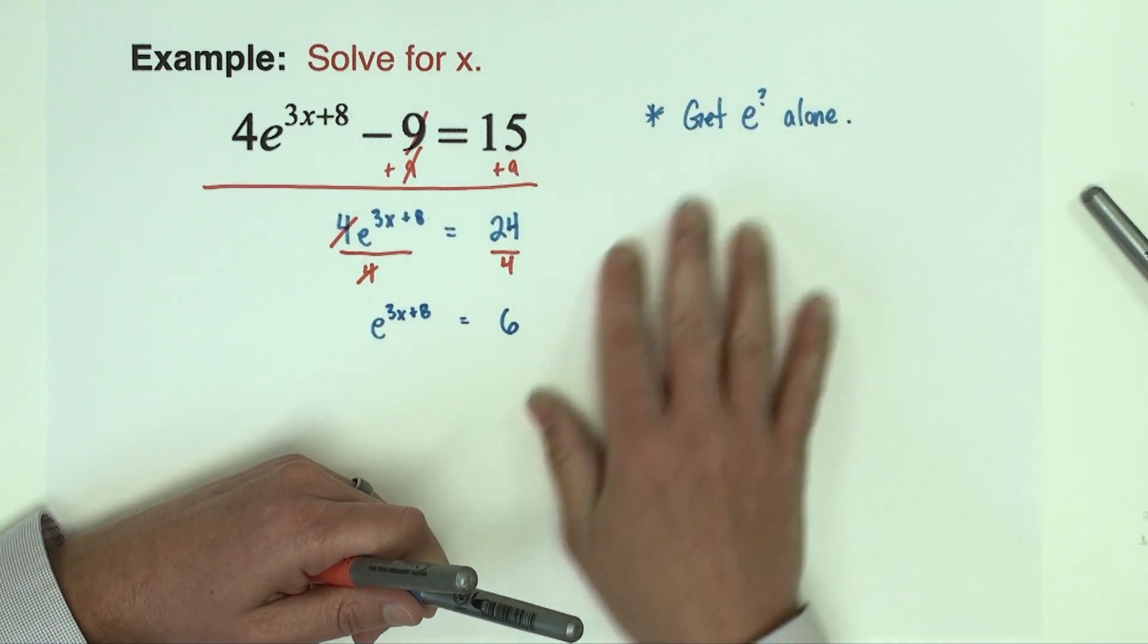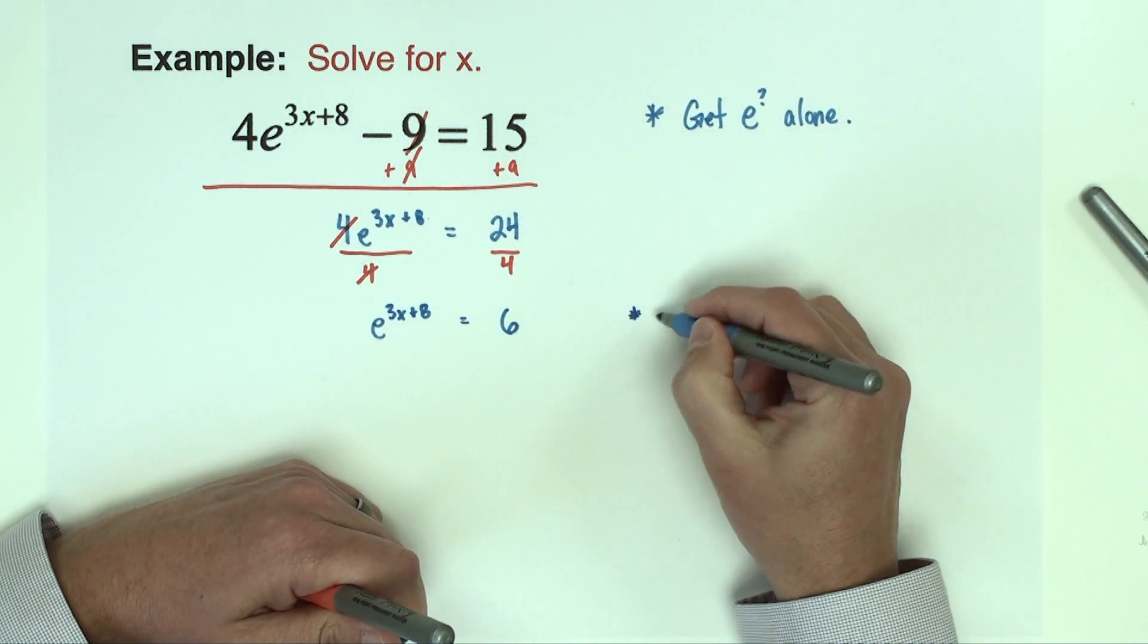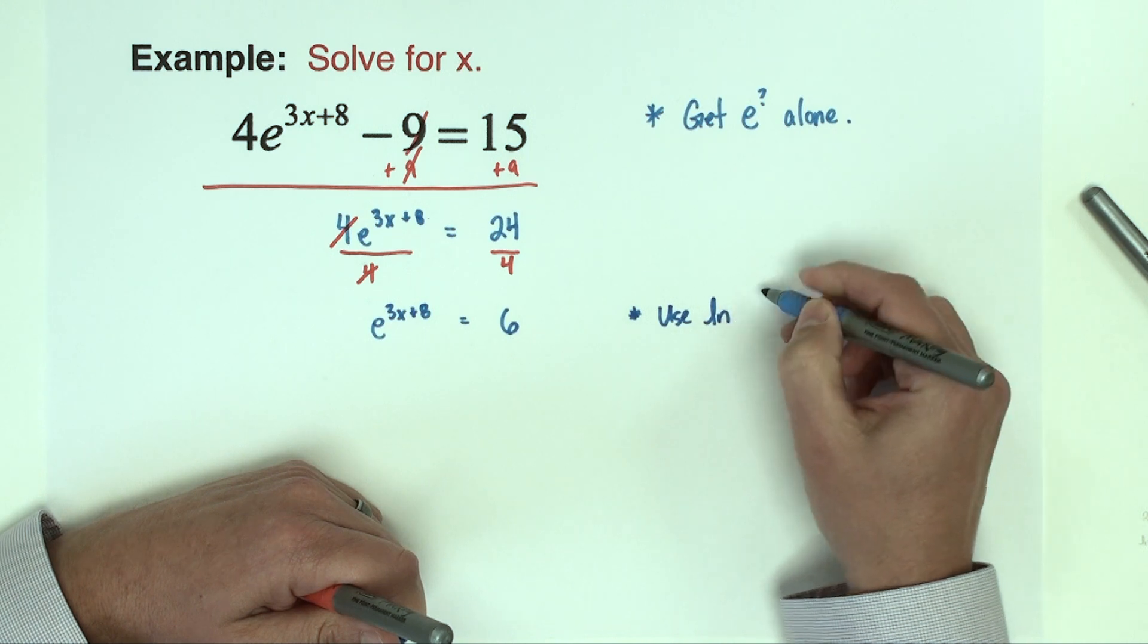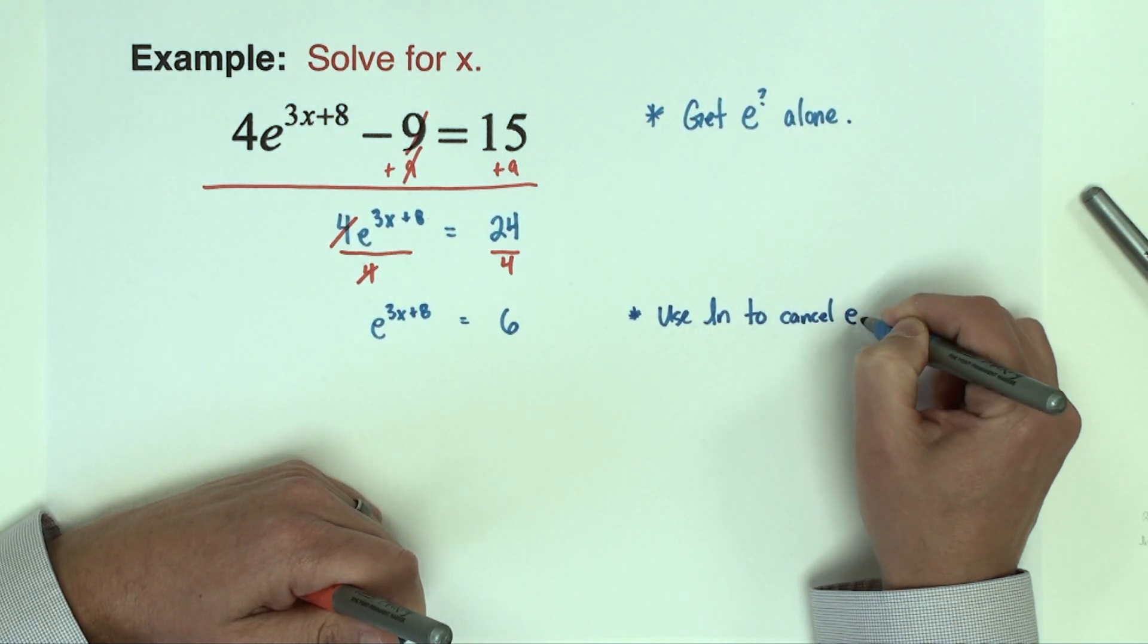Okay, once we get the e by itself, we've done that right here, now we're going to use a natural log to cancel the e.